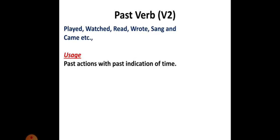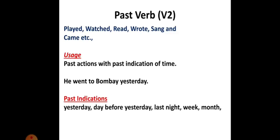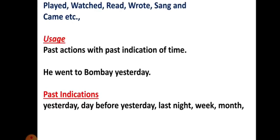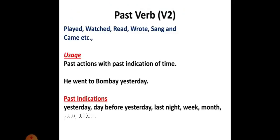We have also learned the usage of past verbs. Played, watched, read, wrote, sang, and came, etc. Past verbs are used to refer to past actions with definite past indications of time given in the sentences. For example, 'he went to Bombay yesterday.' Yesterday is a past indication. Yesterday, day before yesterday, last night, last week, last month, 1980, 1947, and 1950 — these are all past indications of time.